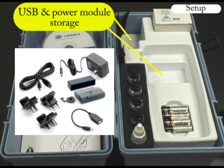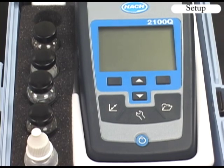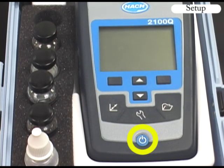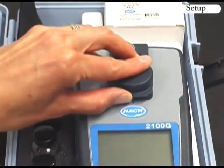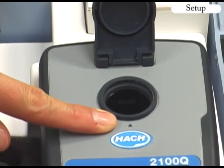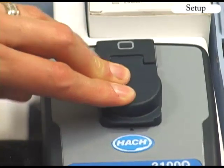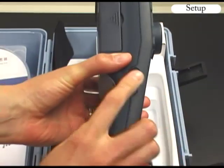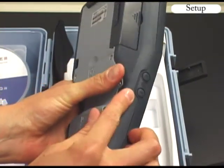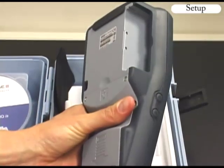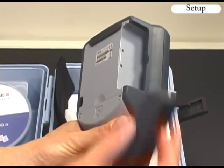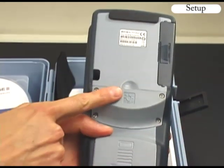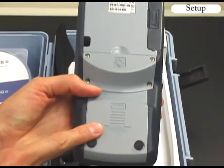There are also open positions inside the case to store the optional USB plus power module and its accessories. On the top of the instrument are the power button, sample cell holder and lid, alignment arrow for sample cell orientation, and attachment location for a lanyard. The backlight keys are located on the side of the instrument, along with the module compartment where the optional USB plus power module is installed. On the back of the instrument are the lamp compartment and the battery compartment.